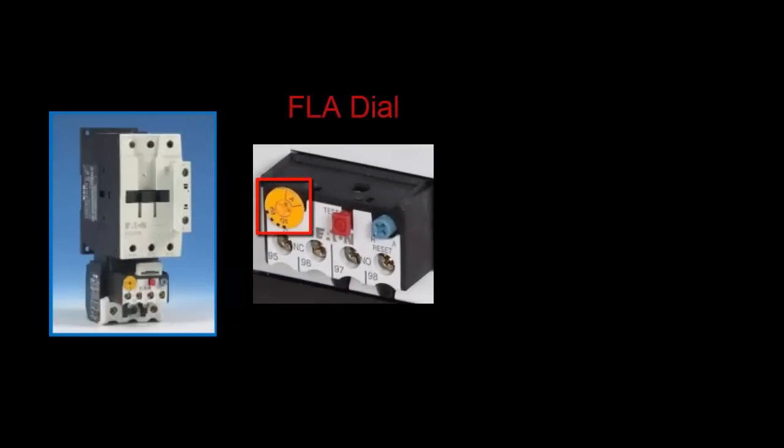So when the contactor is energized, you have power coming in from the line side, flowing all the way through the load side of the overload relay. On the face of the relay, you have the FLA dial, where you set the rated FLA or full load amps of the motor.